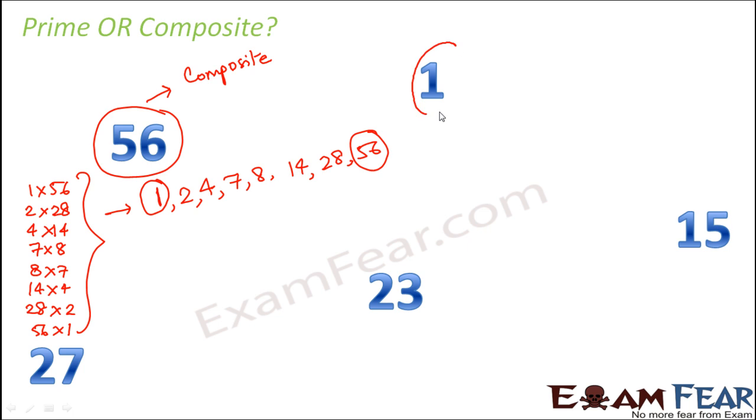Consider 1. So just now we discussed about 1 and we found that 1 is an exception. So it is neither prime nor composite.